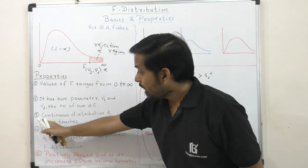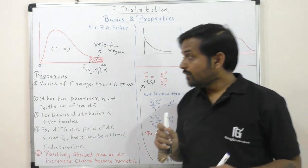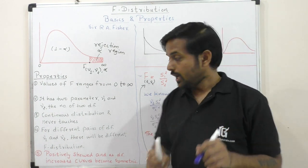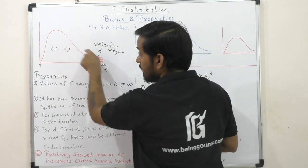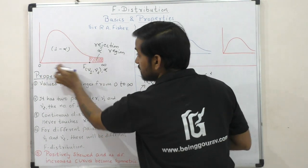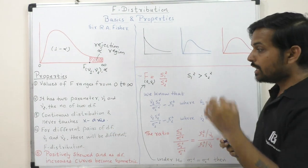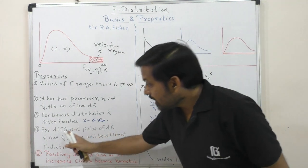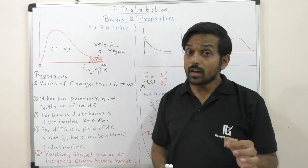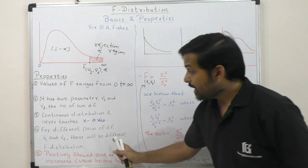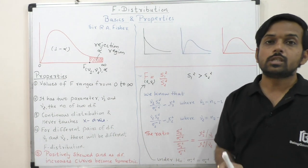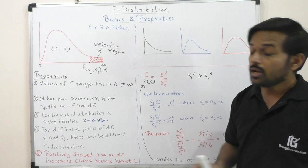The third property is that F distribution is a continuous distribution. This curve will never touch the X-axis — it will always be asymptotic. The fourth property is that different pairs of degrees of freedom ν1 and ν2 produce different F distributions, meaning F distribution is a family of distributions.